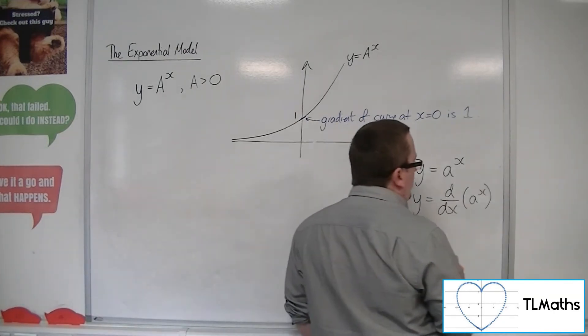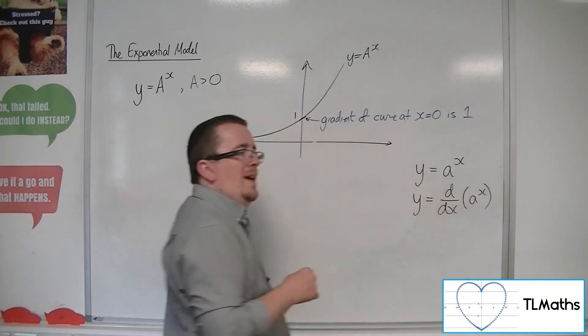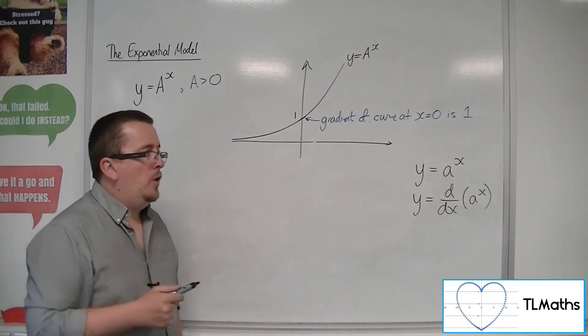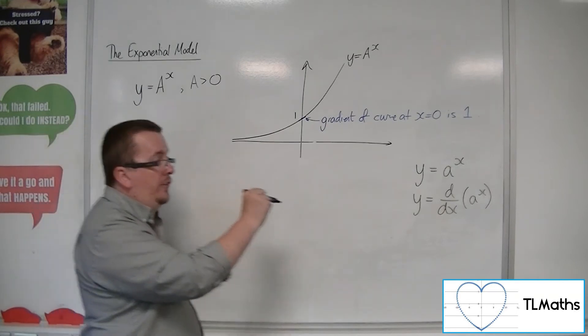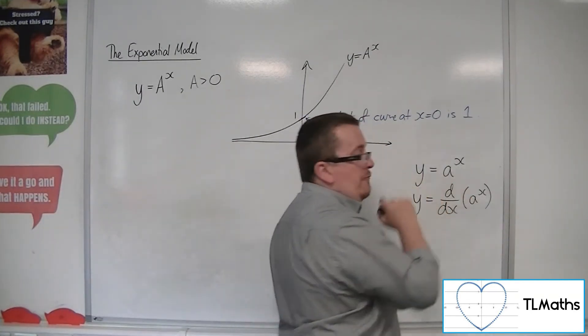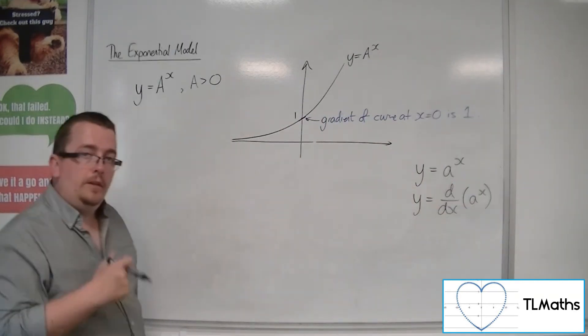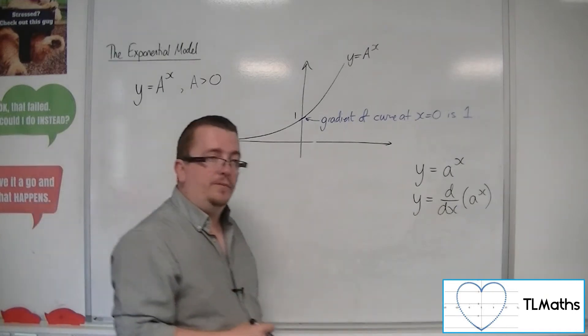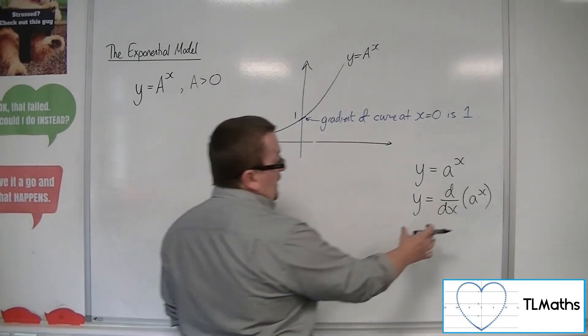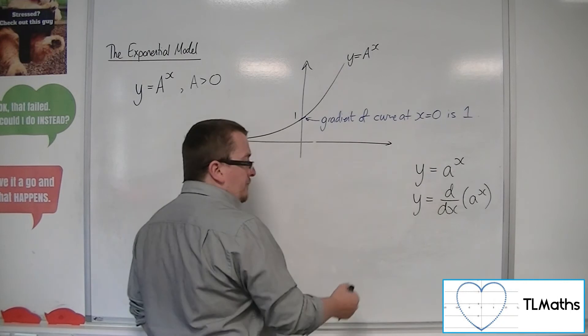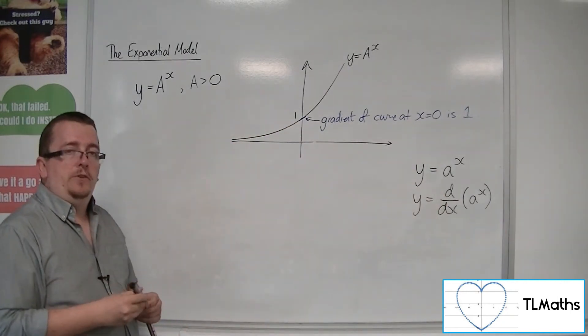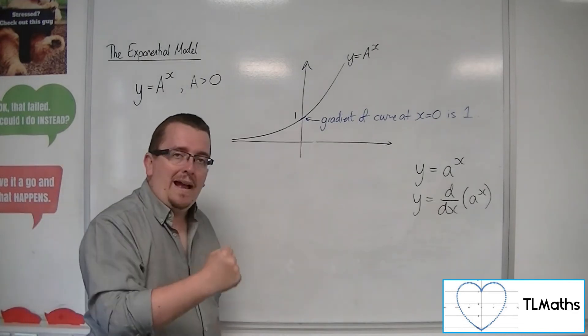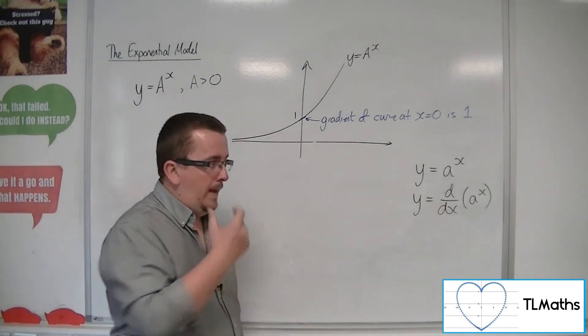Now what this does is it gives you the gradient function of that curve. It tells you the gradient of this curve at every value of x. So it gives you a brand new curve. Now both of these will have a slider for a, and you'll be able to move the slider until the two graphs match one on top of the other.